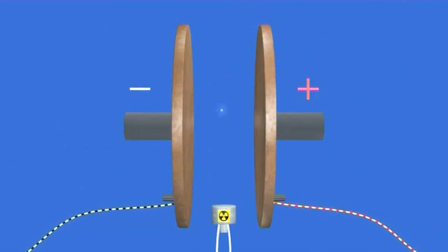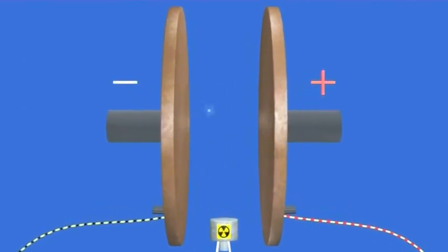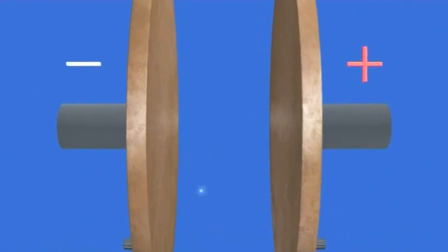I've got my radioactive source at the bottom, allowing the ionizing radiation to come between the plates. Each of those sparkles is representing an air particle which is being ionized.